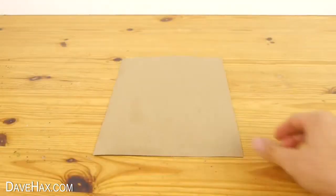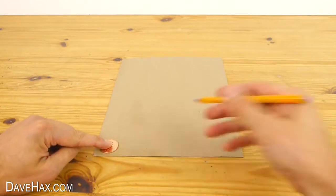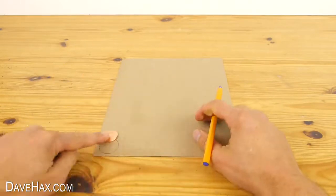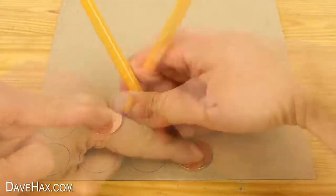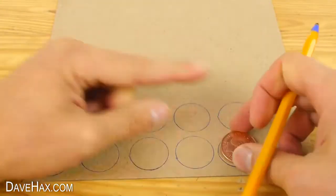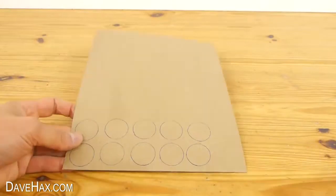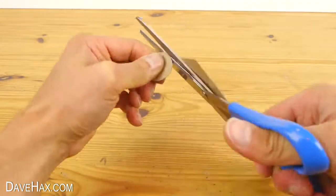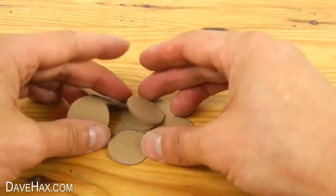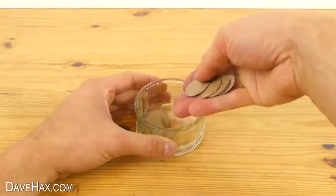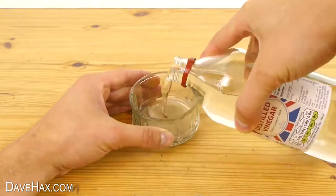Next we need to take a piece of card and draw round one of our coins. We're going to need 9 circles in total but I'm doing one extra just in case. Then take your scissors and cut them all out. When you've done them all put them into a bowl and soak them in vinegar.